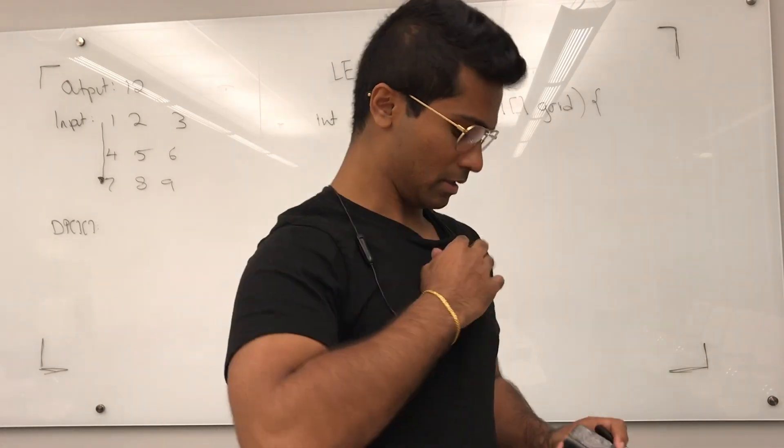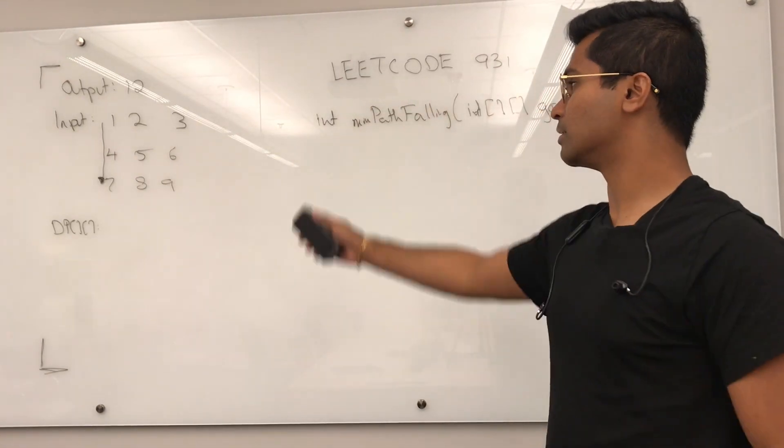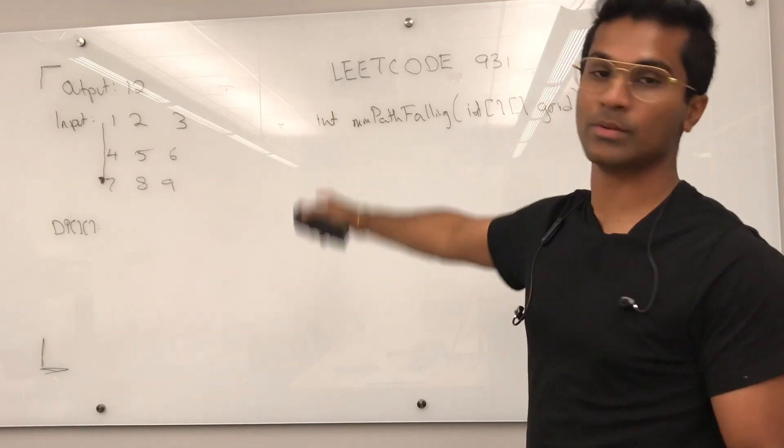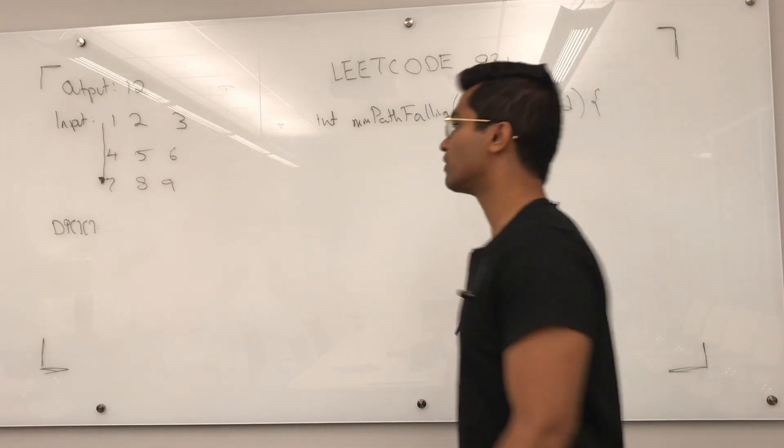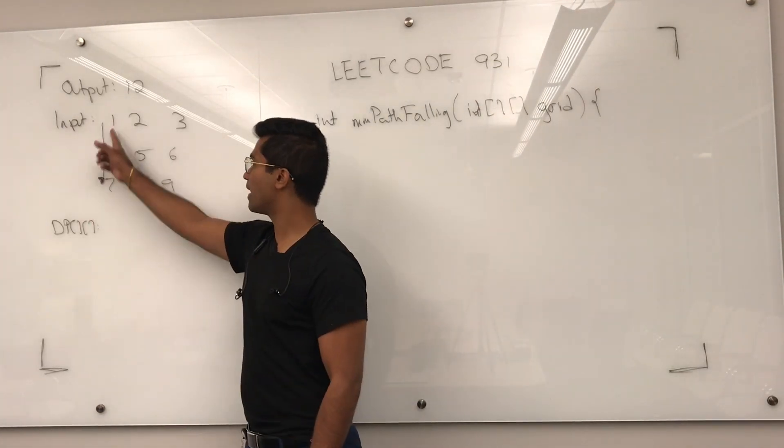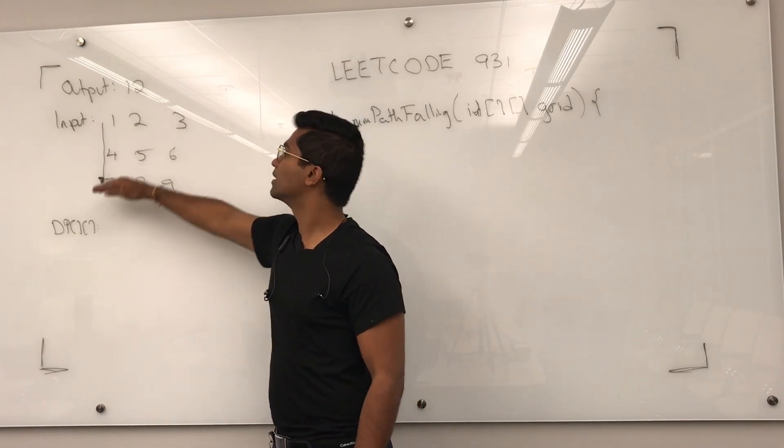Minimum path falling, and the input is a 2D grid and the output is going to be one integer. What they want is to find the minimum path from the top, any of the columns, to get to the bottom.